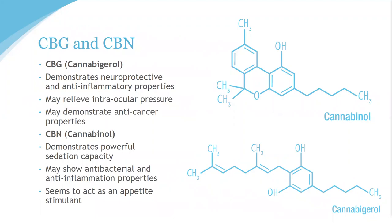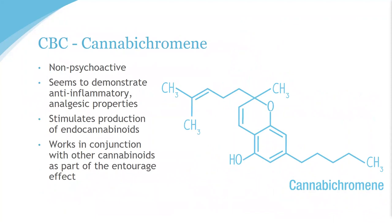Cannabichromene, or CBC, is yet another promising non-psychoactive phytocannabinoid. CBC has been found to have an effect on the perception of pain, as well as the ability to stimulate production of endocannabinoids within the body. CBC is also being investigated not only for its singular benefits, but for its ability to work in conjunction with other cannabinoids, contributing to the entourage effect. CBC also exhibits powerful anti-inflammatory properties and seems to suppress excessive lipid production in sebaceous glands, which may be useful in the treatment of chronic acne and other skin conditions.